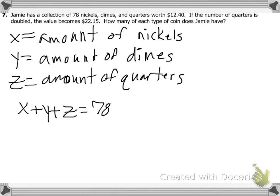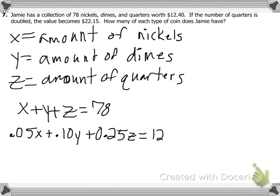Can someone raise your hand and give me another equation? It's the amount that each coin is worth in decimal form. A nickel's worth 5 cents, so 0.05X. A dime is 10 cents, so 0.10Y. A quarter's worth 25 cents, so 0.25Z. That equals the total value, which is $12.40. So: 0.05X plus 0.10Y plus 0.25Z equals 12.40. Everyone okay with that equation?